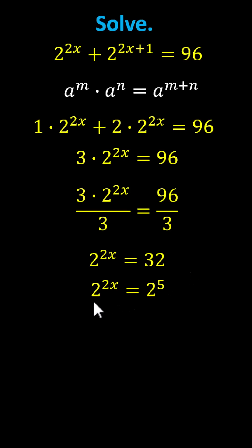And now because we have two exponential terms equal to each other with the same base, the exponents must be equal indicating 2x equals 5. And now to solve for x we divide both sides by 2, x equals 5 halves. I hope you found this helpful. Thank you.